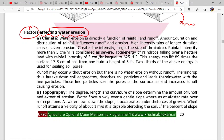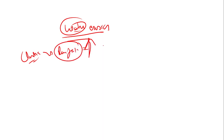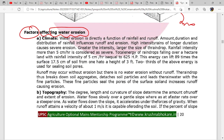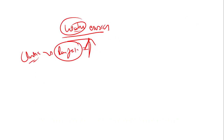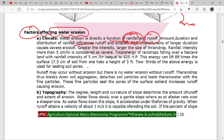Factors affecting water erosion - you can answer this yourself. Climatic factors must be there: where rainfall is higher, erosion is more. In rainfall, what matters is duration - how long it falls - and amount - how much rainfall falls - and intensity. High intensity rainfall of longer duration causes severe erosion. The greater the intensity, the larger the size of raindrop. Rainfall intensity of five centimeters per hour is a threshold to remember.